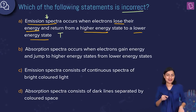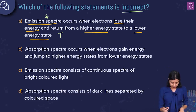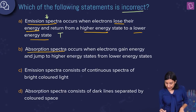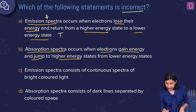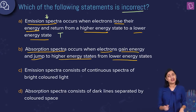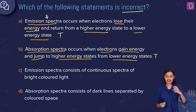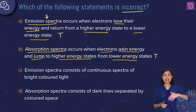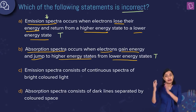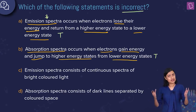This statement is absolutely true. Option B says absorption spectra occurs when electrons gain energy and jump to higher energy states from lower energy states. This is also true — absorption spectrum occurs when your electron gets excited, and when you take an image of the leftover light, you get an absorption spectrum. This statement is true.